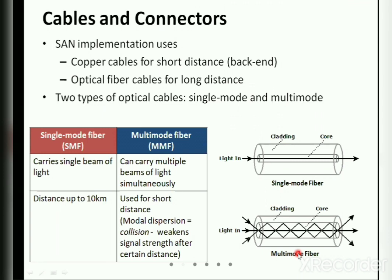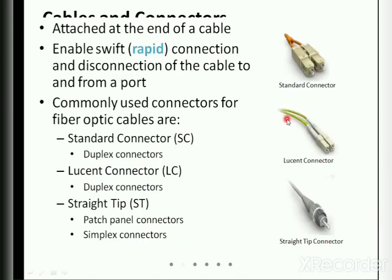Multi-mode fibers are used for shorter distances. If you see people putting fiber cables in the street — digging and laying them — there will be a lot of cables within the conduit, and they use single-mode fiber cables, not multi-mode. Multi-mode is used where there will be some intermediate station connected so that information can be transferred. Now, connectors are attached at the end of the cable and are used for connecting or disconnecting to the port.